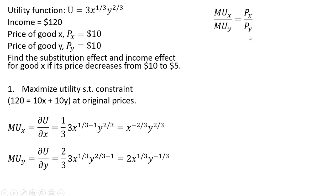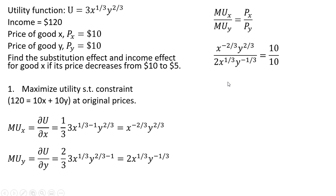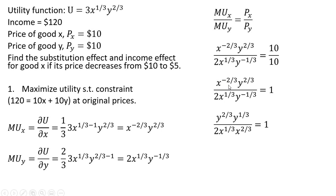We're going to set up our utility maximizing condition. We set the marginal rate of substitution — given as the ratio of the marginal utilities — equal to the ratio of the prices. Making our substitutions, we've got MU_X in the numerator, MU_Y in the denominator, and the price of good X and price of good Y are both equal to 10. The right-hand side simplifies to 1. Moving terms, we get Y divided by 2X equals 1.